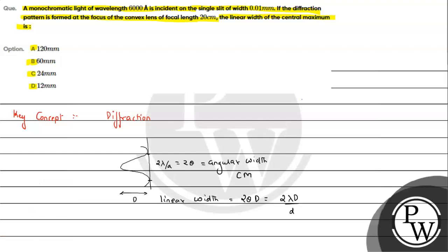So here we can write linear width equals 2 times λ, which is 6000 angstrom or 6×10^-7 meter, times capital D, the focal length 0.2 meter, divided by small d, 1×10^-5. On simplification, this value we have...